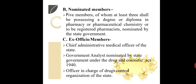Coming to the nominated members: 5 members, of whom at least 3 shall possess a degree or diploma in pharmacy or pharmaceutical chemistry, or be a registered pharmacist, nominated by the state government. The third category is ex-officio members, which includes the chief administrative medical officer of the state, the government analyst nominated by the state government under the Drugs and Cosmetics Act 1940, and the officer in charge of the drug controller organization of the state. This was the composition of the state pharmacy council.